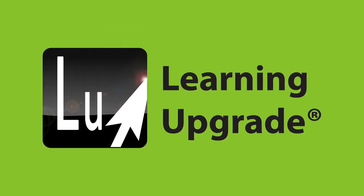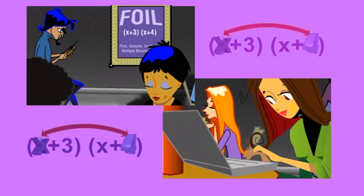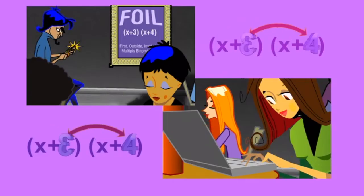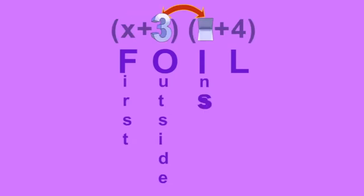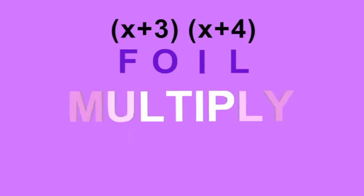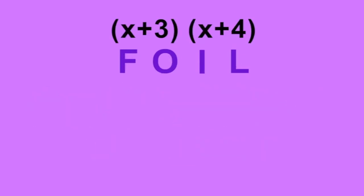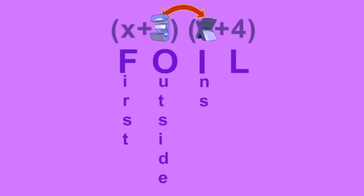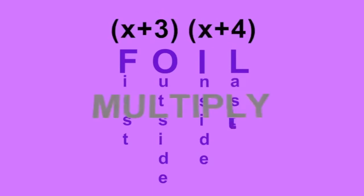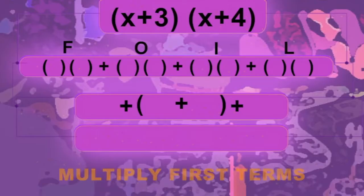Learning Upgrade. Start Program. First, outside, inside, last — multiply binomials fast. First, outside, inside, last — multiply binomials fast.